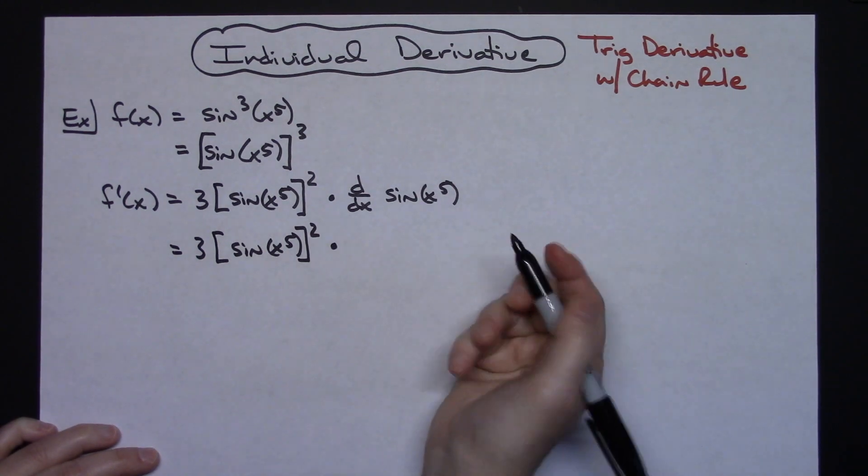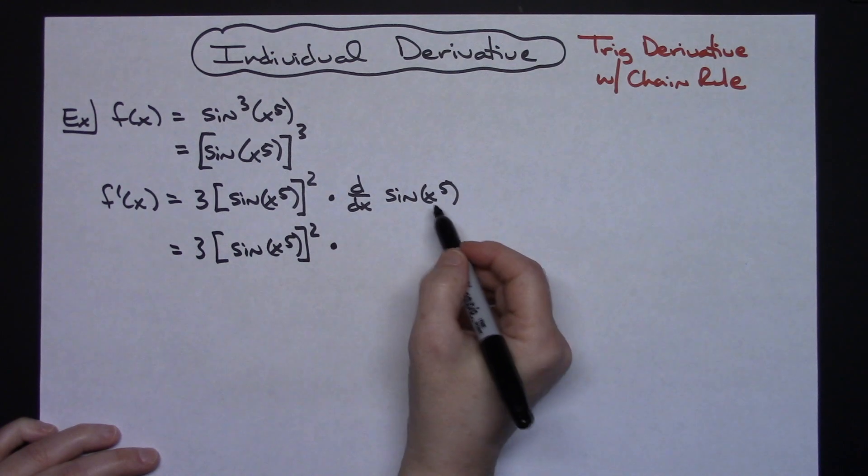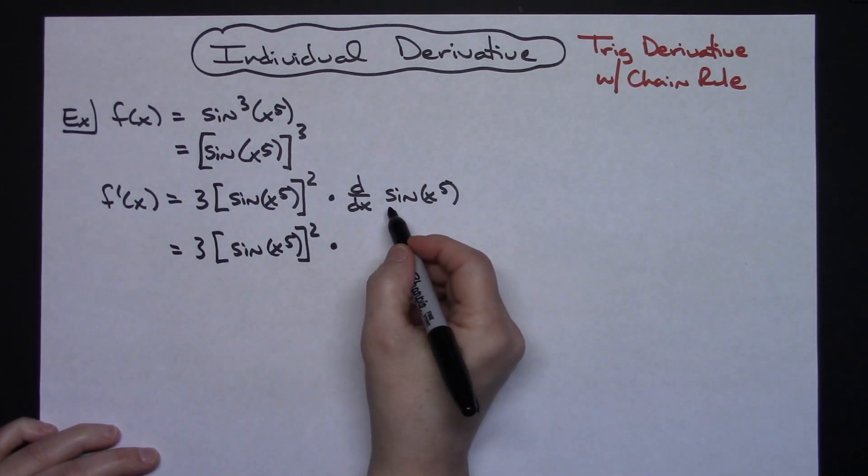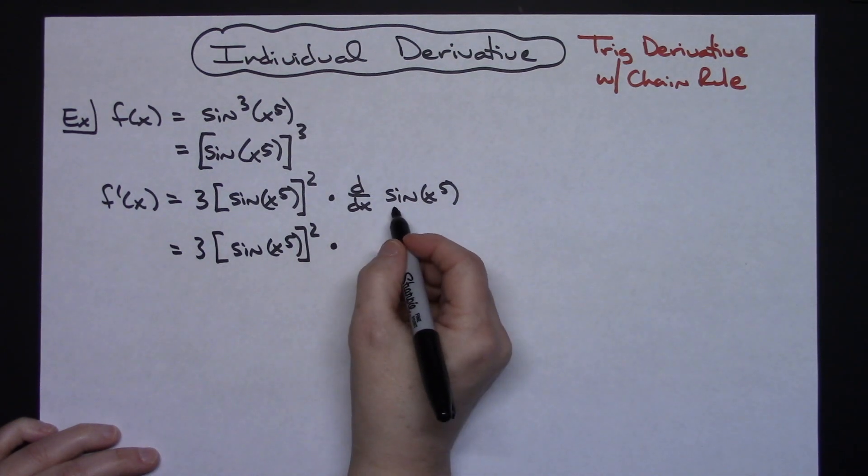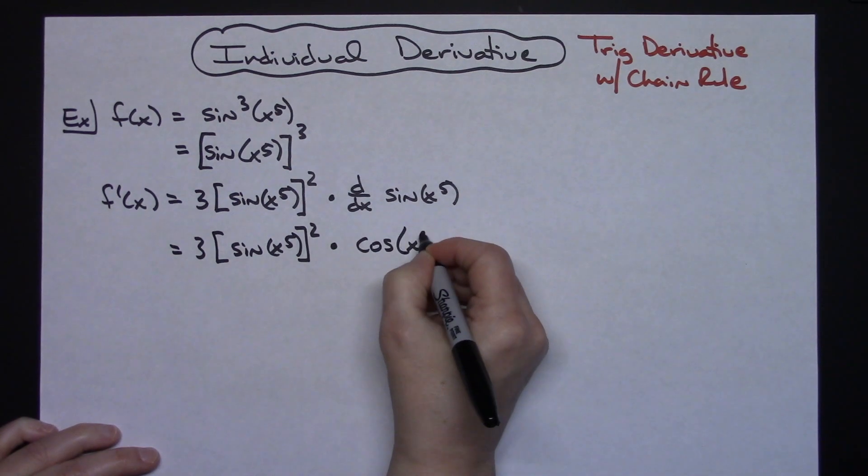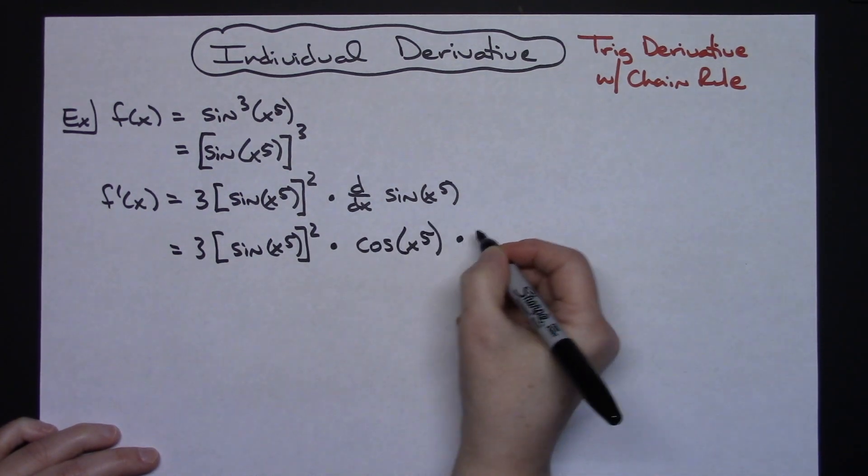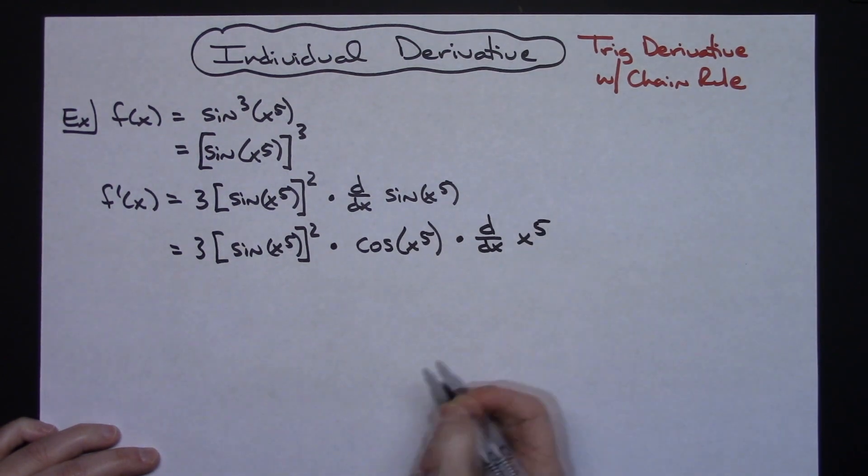Now here again hopefully you can see you've got outside function which is your sine. You have an inside function which is x to the fifth. We take the derivative of the outside function and leave the inside function alone. So derivative of sine is going to be cosine. Leave the inside function alone x to the fifth and then add your chain times d dx of that inside function x to the fifth.